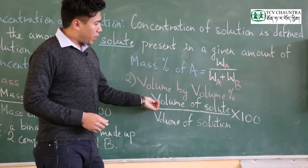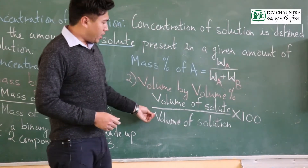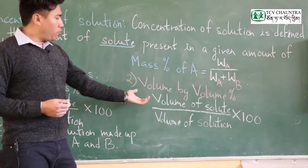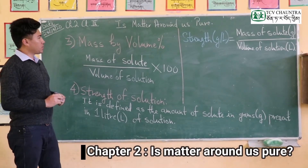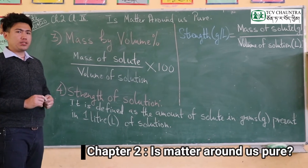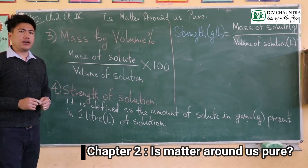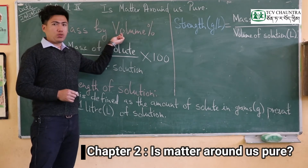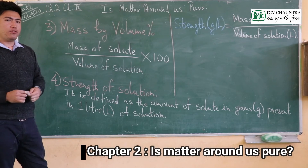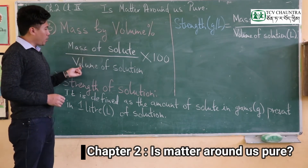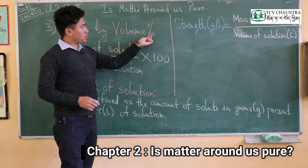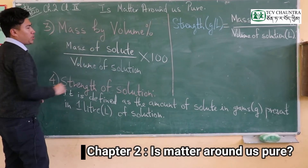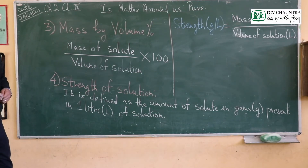The volume by volume formula and mass by volume formula are also used. If you need to calculate, we can take the mass of solute divided by the volume of solution, then multiply by 100 to get the percentage. So if we put the mass of solute and volume of solution into the formula, we can calculate the percentage.